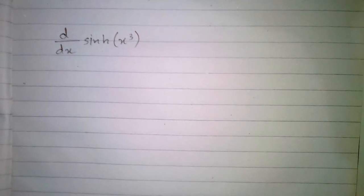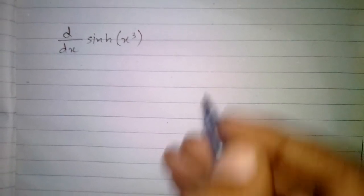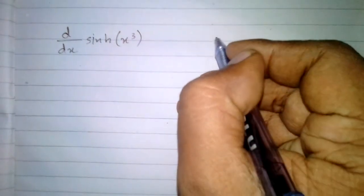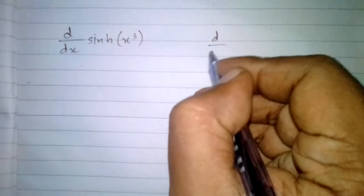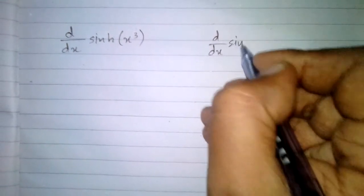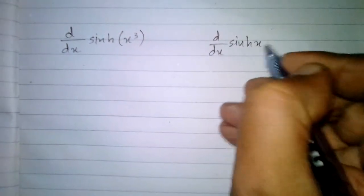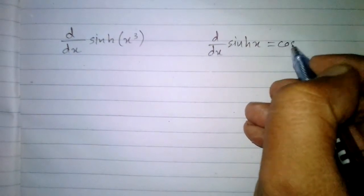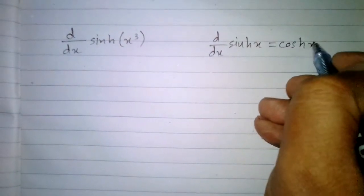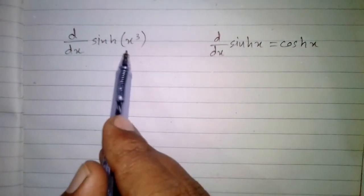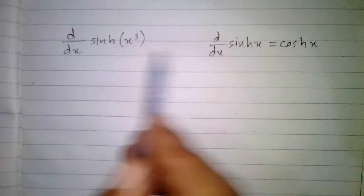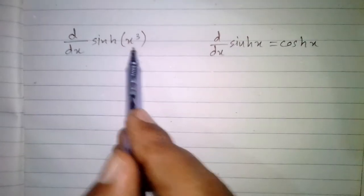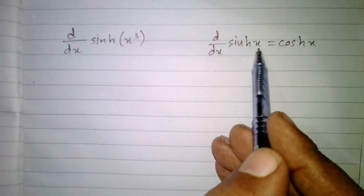In this video we will find the derivative of hyperbolic sine of x cube. We know that the derivative of hyperbolic sine x is hyperbolic cos x. So here we have x cube in place of this x.